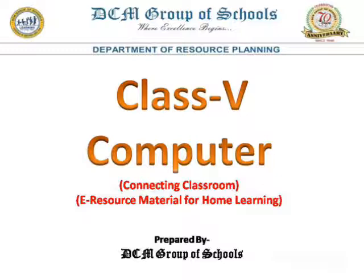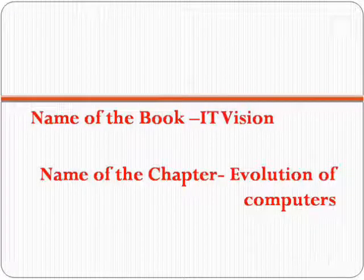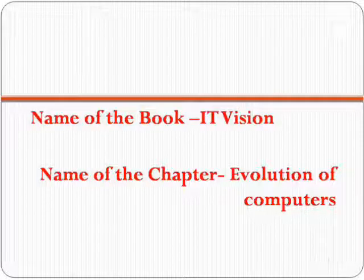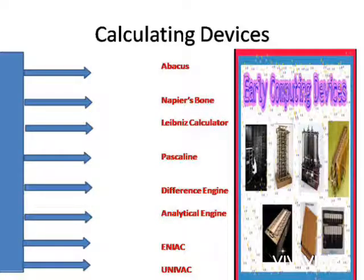Hello students, welcome to Connecting Class to Home, the e-learning program by DCM Group of Schools. The name of your book is IT Virgin and the name of the chapter is Evolution of Computer. At the end of this video, you are going to learn about calculating devices, generations of computer, and types of computer.